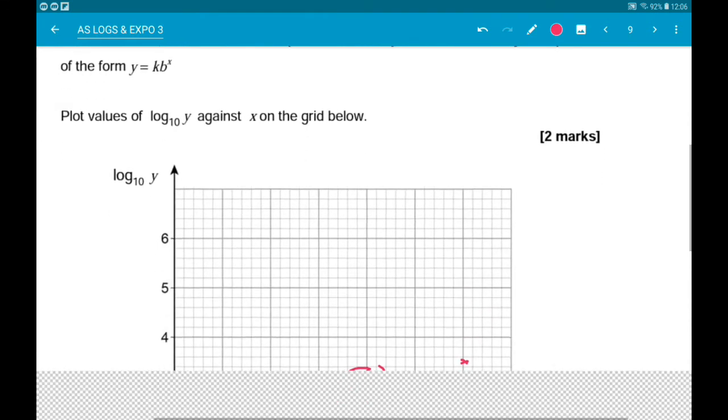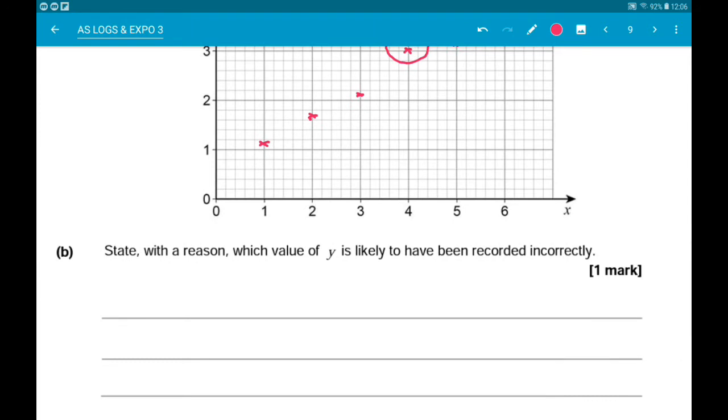So that y value is 1100. So we would say y equals 1100. And then the reason would be that it doesn't fit with the rest of the data.